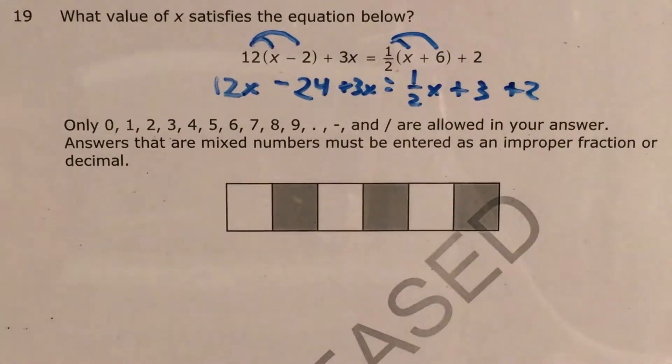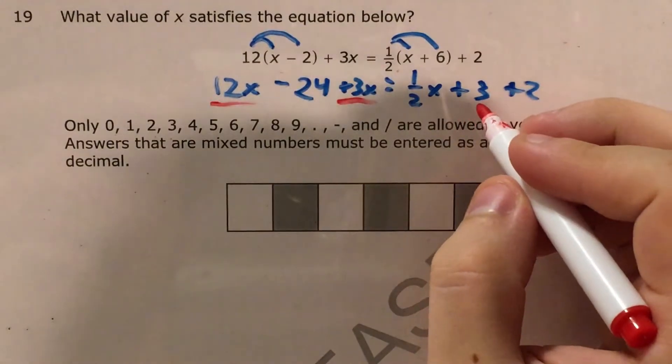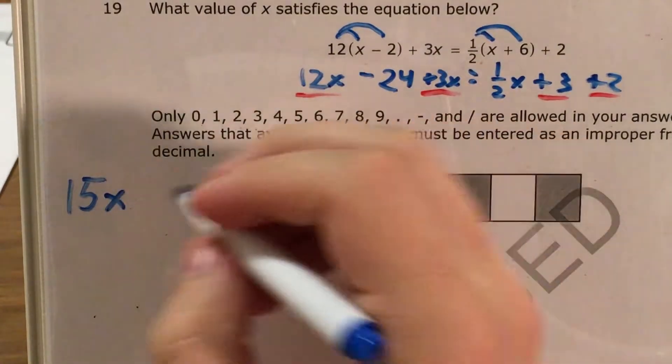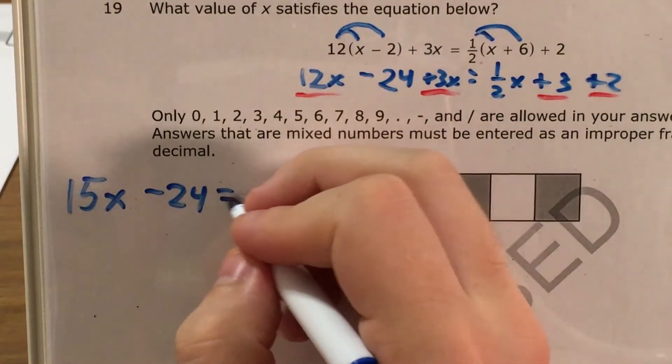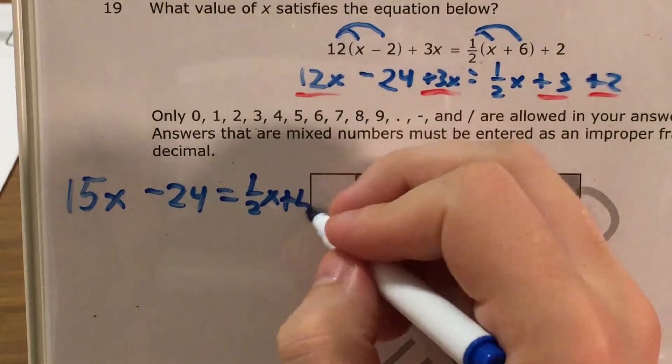So now I can see that I have some like terms that I need to combine. For instance I've got 12x plus 3x, and then I've got plus 3 and plus 2. So let's go ahead and combine those and I'll write out the next form of my equation over here on the left. 12x plus 3x is 15x minus 24 equals 1 half x plus 5.